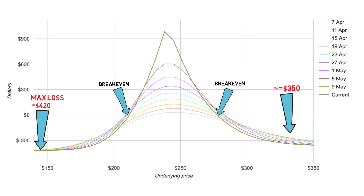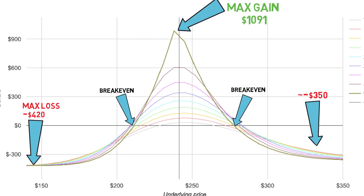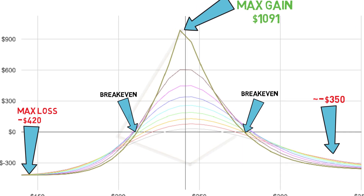Now, our favorite part: the maximum return. This is where you can make the most at expiration. If Apple is at $240 at expiration, we are set to gain $1,091. From break even, the further we move in towards $240, the better our return. If you look at the graph, we can see our max return jumps up, forming a pyramid with the tip of the pyramid right around the strike price of $240.